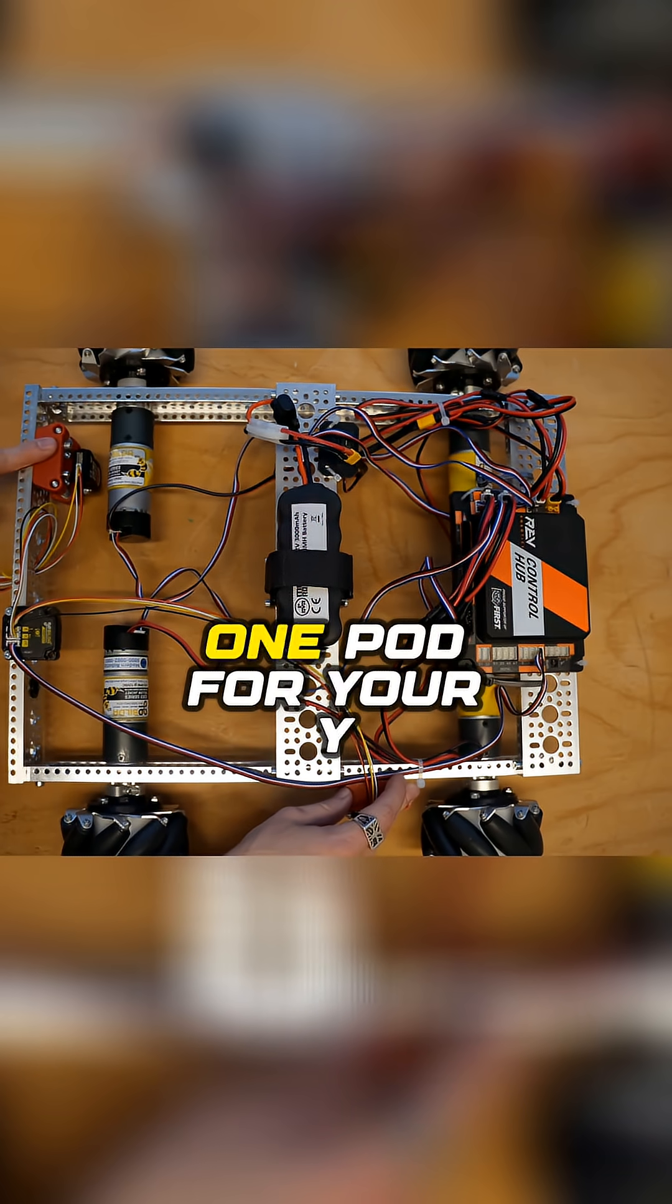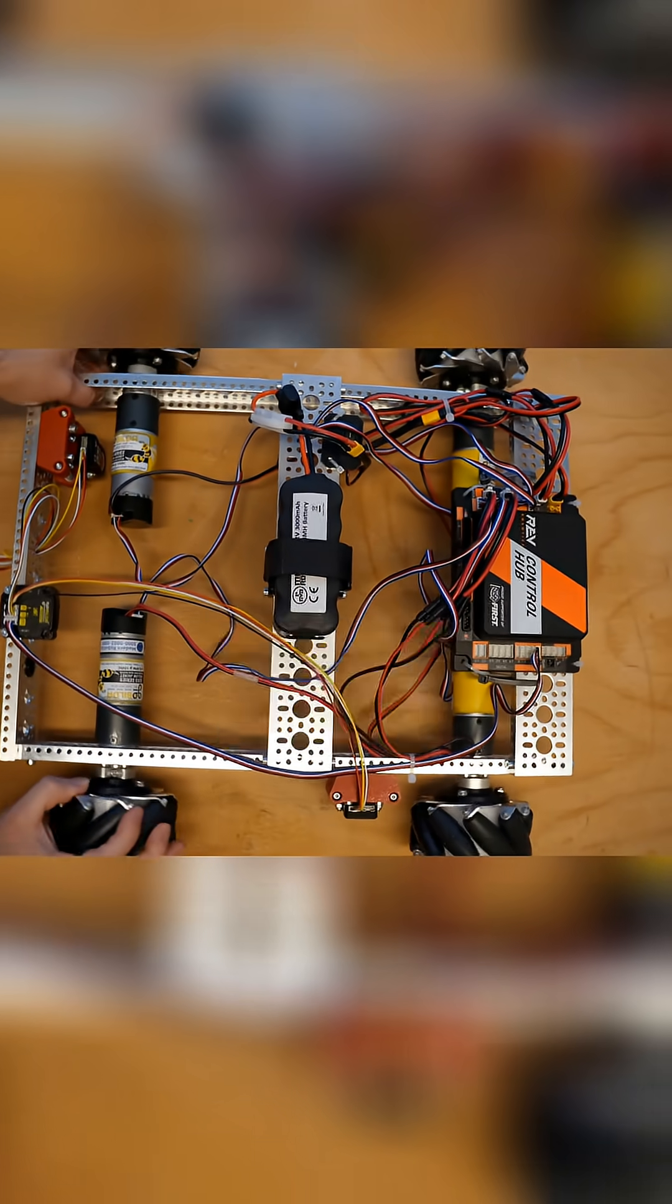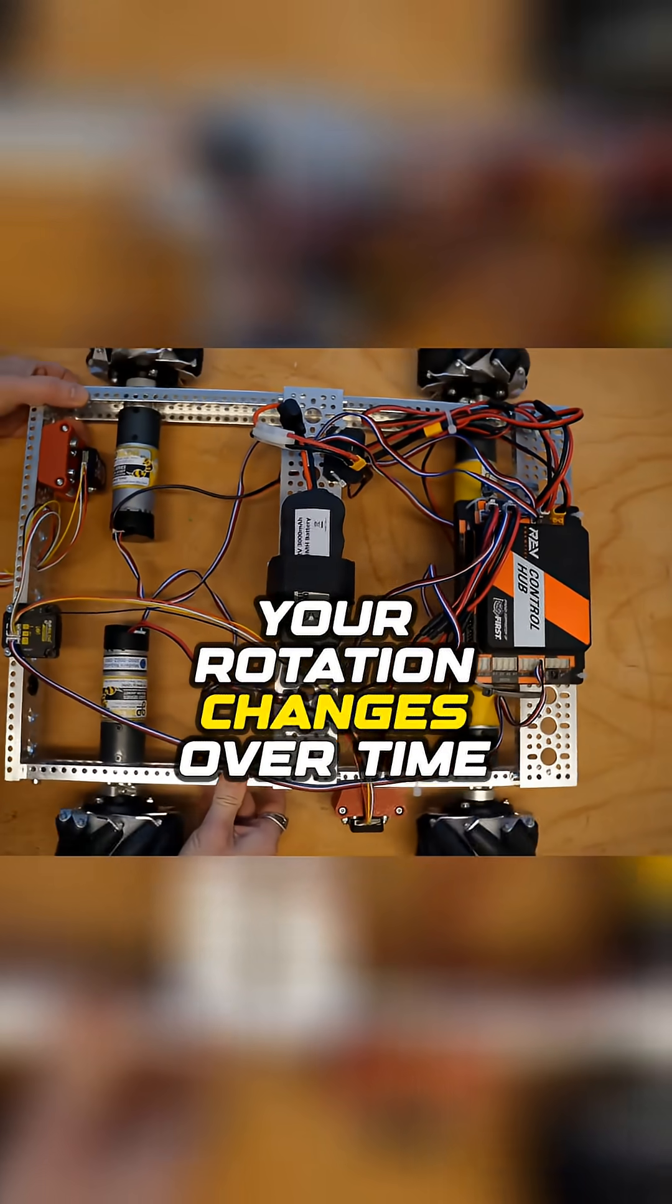So you have one pod for your X, one pod for your Y, and then you also get the IMU, which keeps track of your heading, which will give you your rotation changes over time.